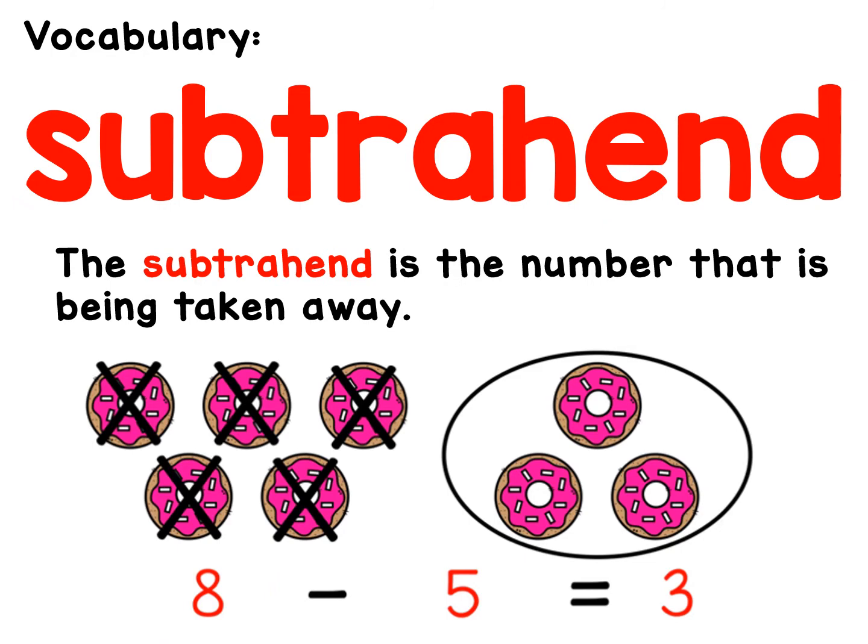Now we're going to learn the last part to a subtraction sentence. It's called the subtrahend. The subtrahend is the number that's being taken away. So in eight minus five equals three, the five is how many are getting x'd out. So that is the subtrahend.